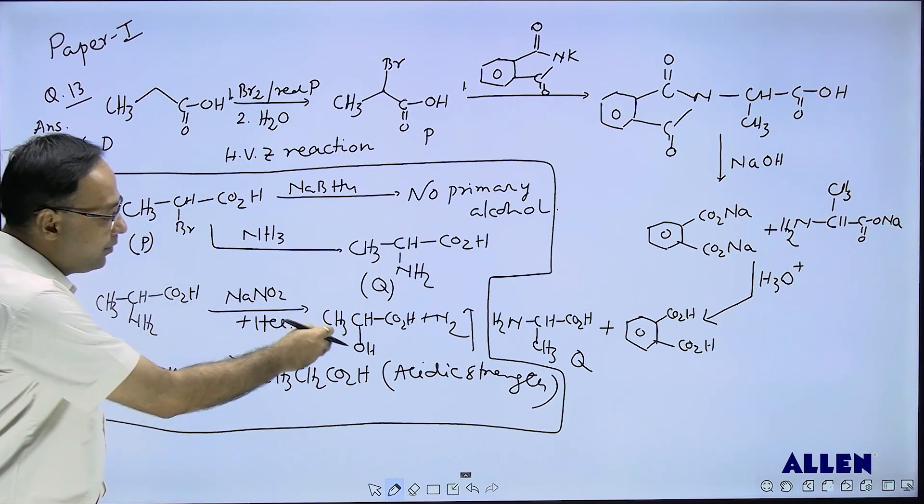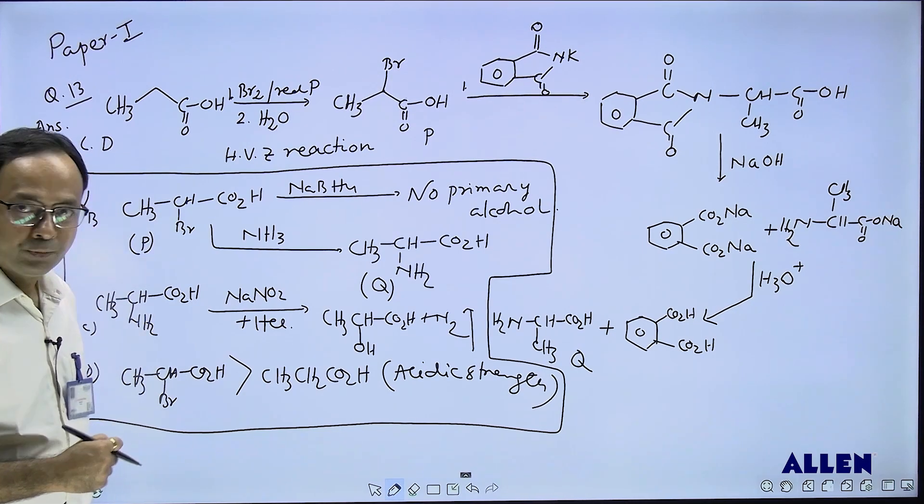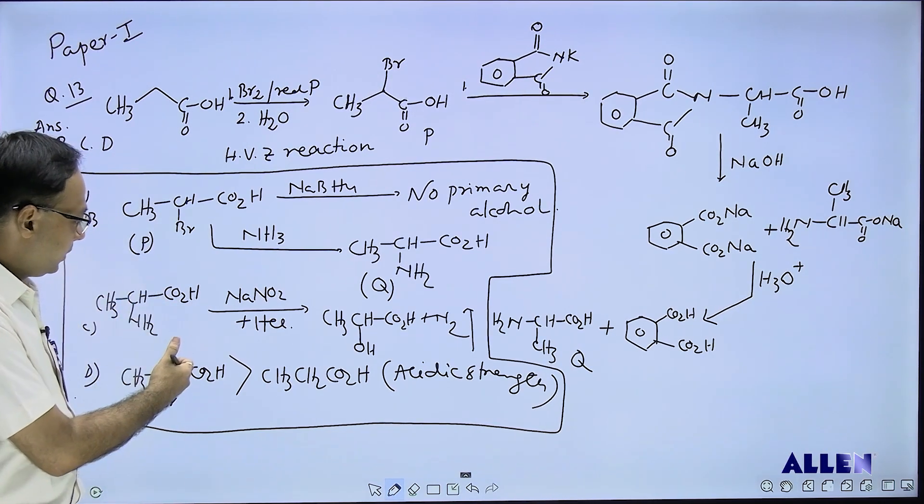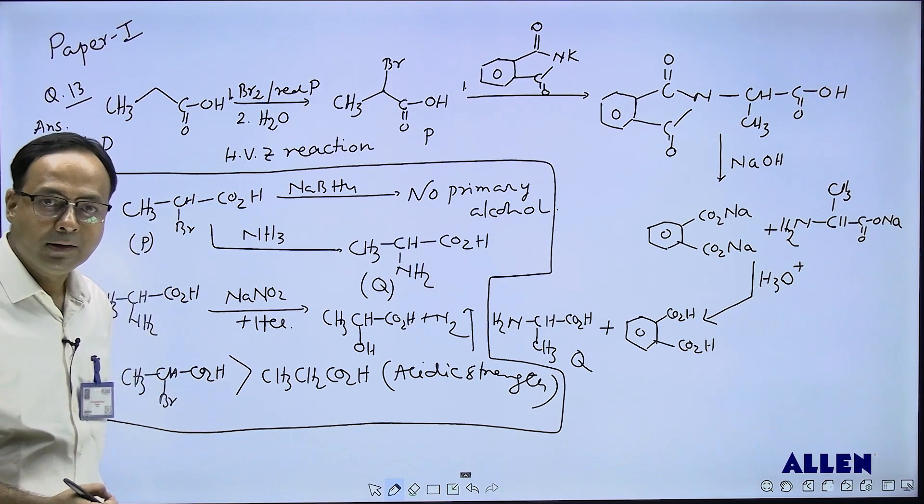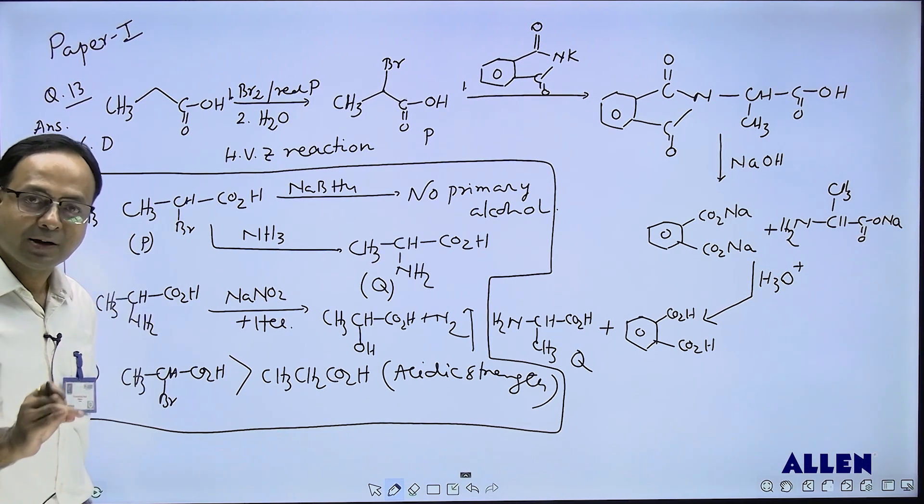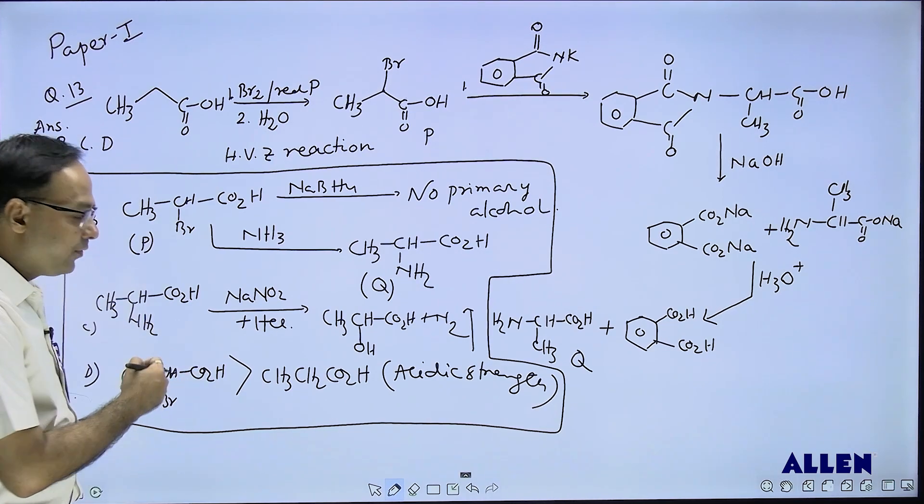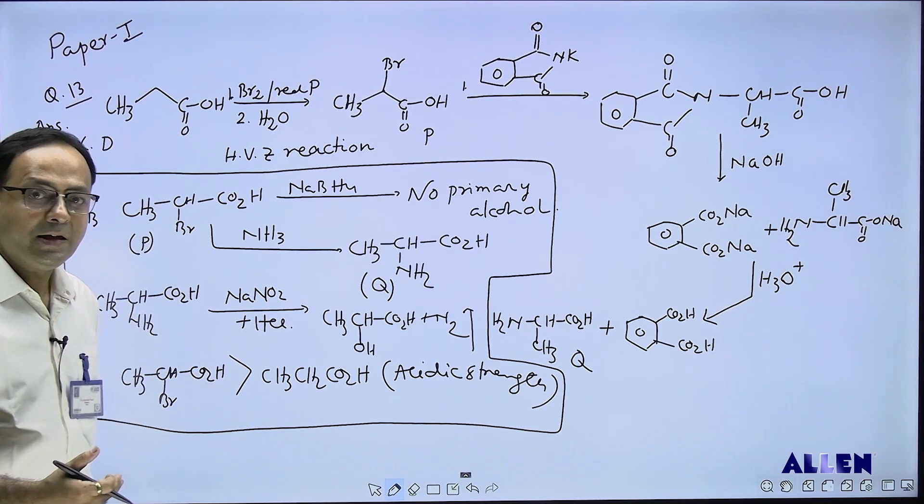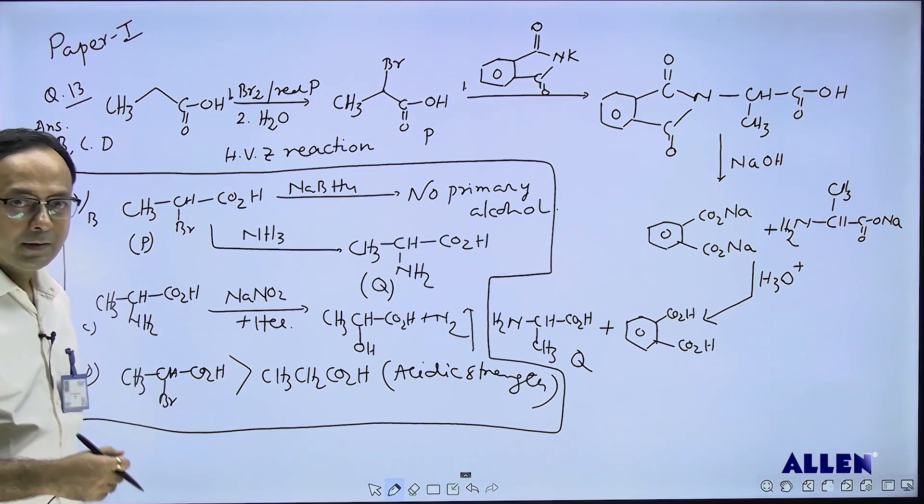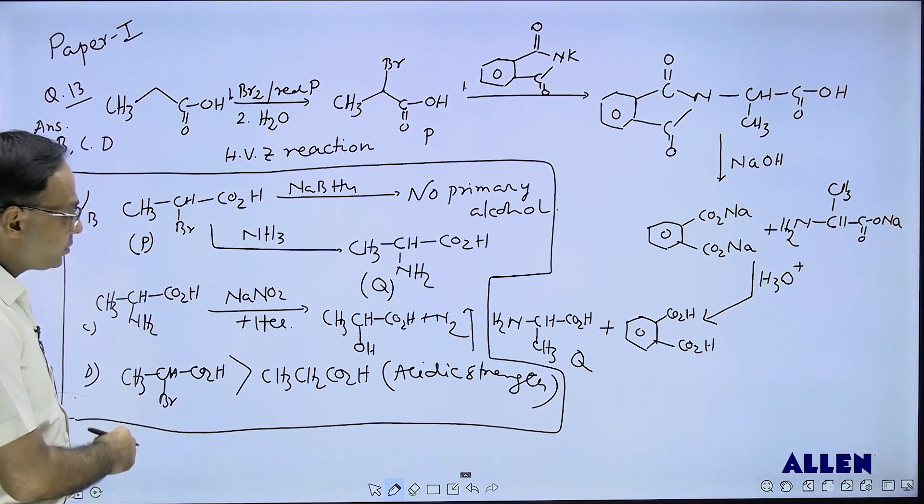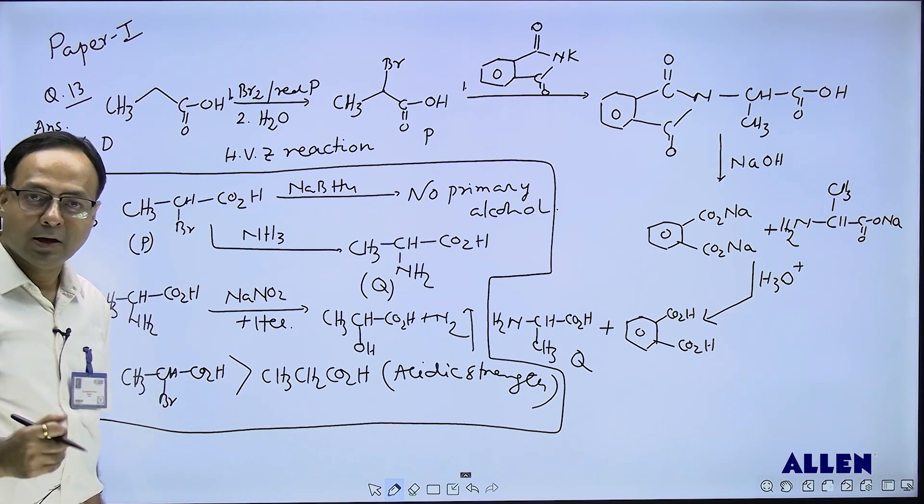Option fourth: as it is alpha bromo acid, because of minus I effect of bromine group, the entire compound is more acidic than simple propanoic acid. So option D is also correct. The answer is B, C, and D. That is all.